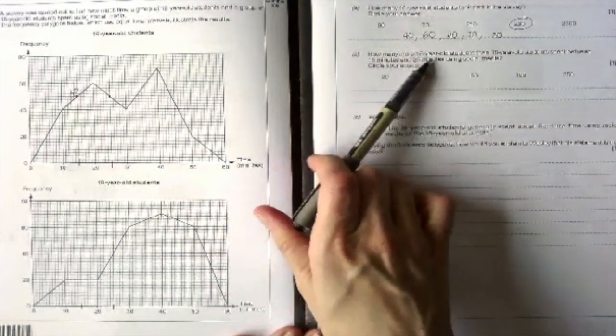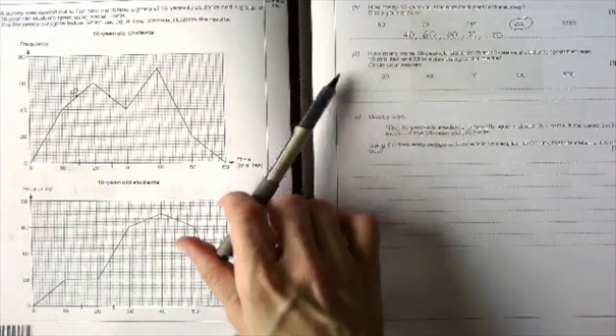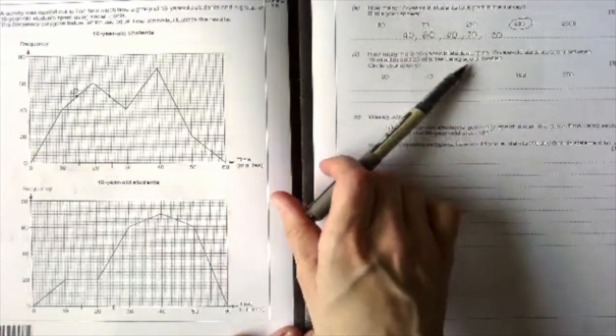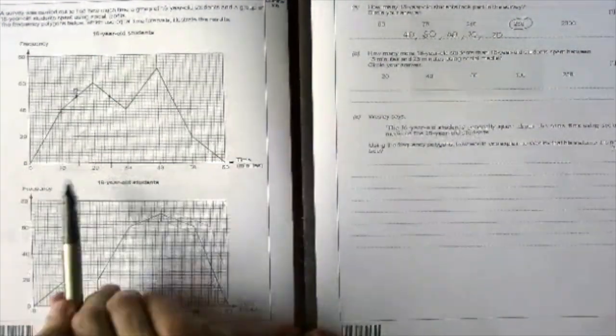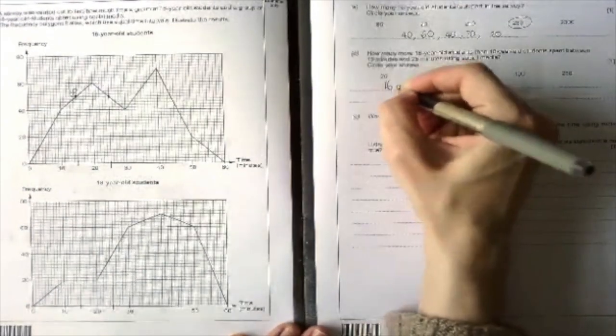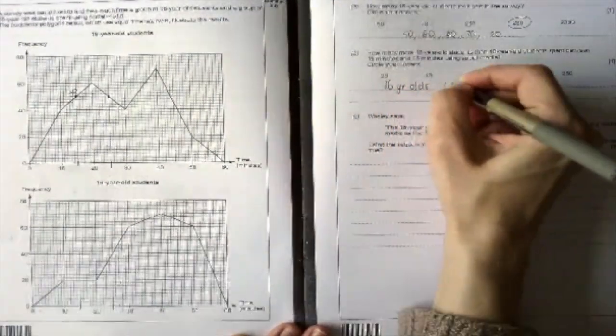Part B: how many more 16-year-old students than 18-year-old students spent between 15 and 25 minutes? So for the 16-year-olds at 15 minutes there were 50 and at 25 minutes there were 50. So for the 16-year-olds there were 100.